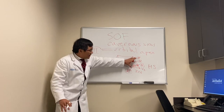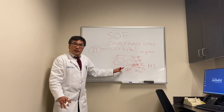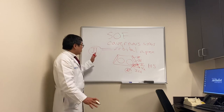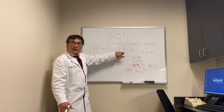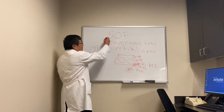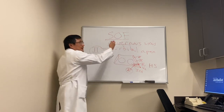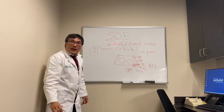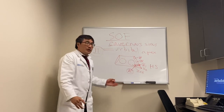If we have a combination of cranial nerves 3, 4, 5.1, 5.2, or 6 plus CN2, that's going to place us in the orbital apex. The superior orbital fissure is going to be very difficult to differentiate from the cavernous sinus because it involves the same cranial nerves.